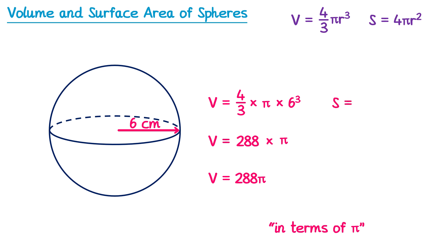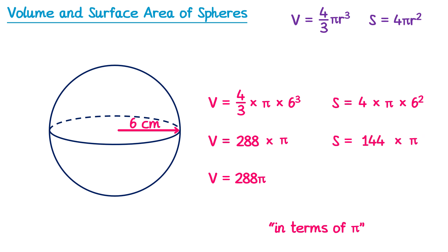For the surface area in terms of π: 4 multiplied by π multiplied by r squared, so multiplied by 6 squared. 6 squared is 36, and 4 multiplied by 36 is 144. So the surface area is 144π.